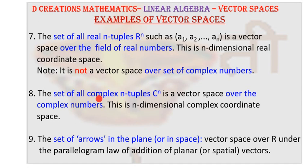Now, the set of all complex n-tuples is also a vector space. In this case, it is a vector space over the field of complex numbers. And this is the n-dimensional complex coordinate space. Note, we are not talking about field of real numbers separately because real numbers are included in complex numbers, isn't it?